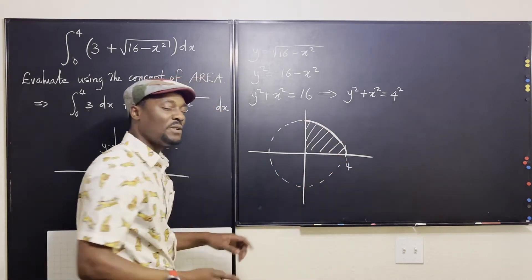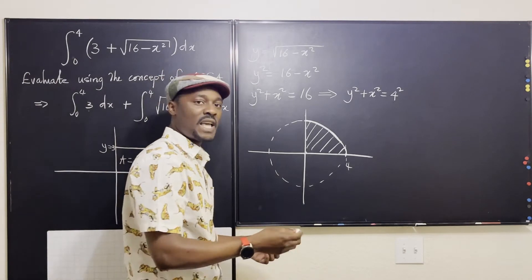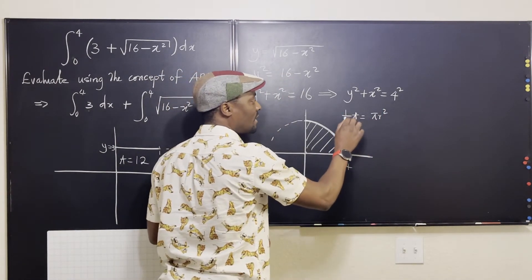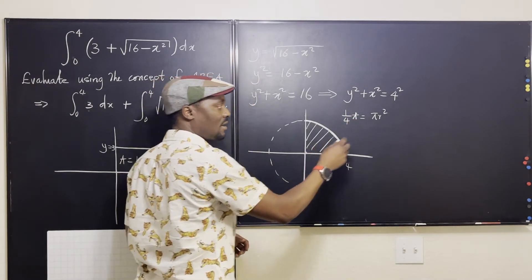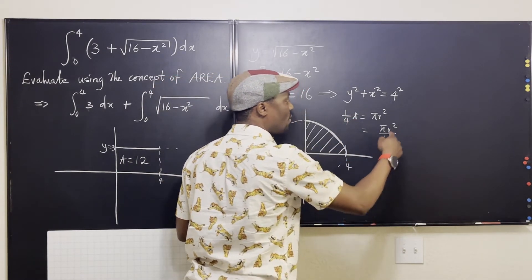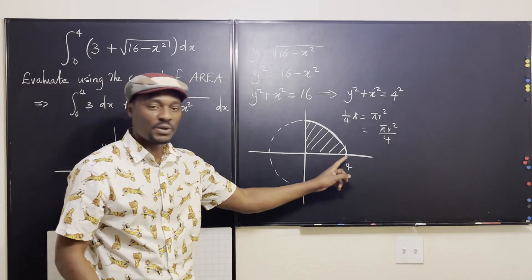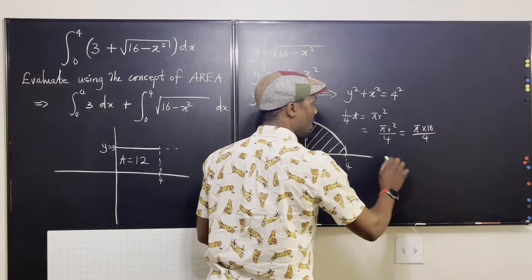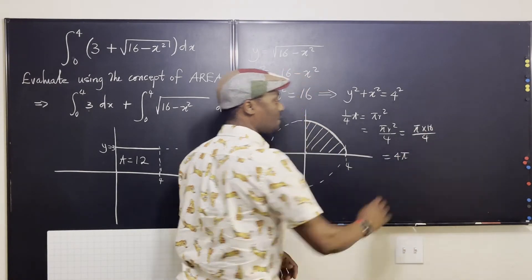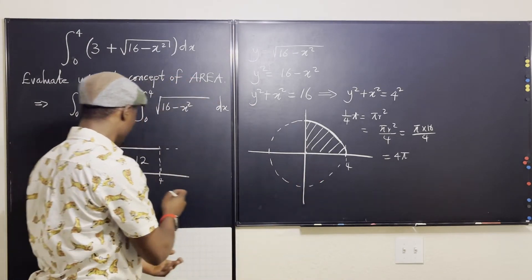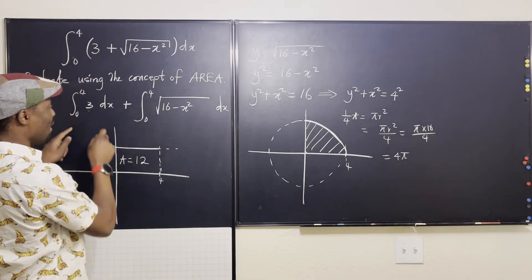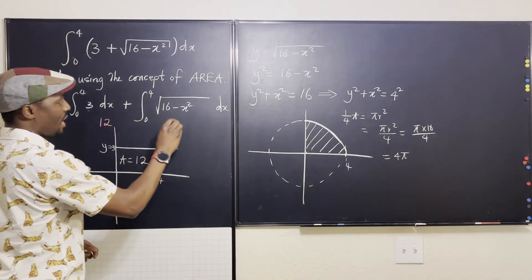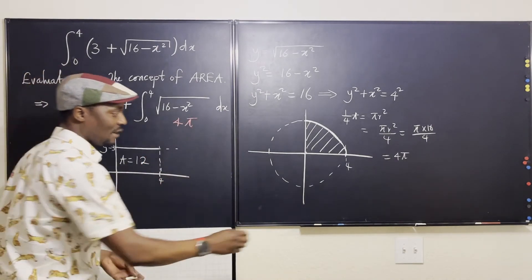What is the area of a quarter of a circle of radius 4? The area of a full circle is π r squared, but we need one fourth of that, so that's π r squared over 4. Our radius is 4, so that's π times 16 over 4, which gives us 4π. So the answer to this second part is 4π. Bring it here and add it to the 12 from before — you get two parts: 12 and 4π.